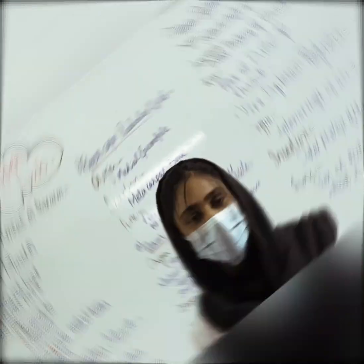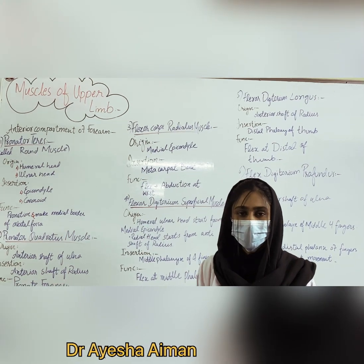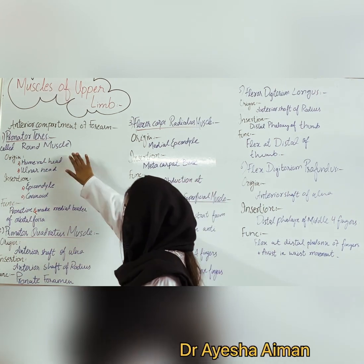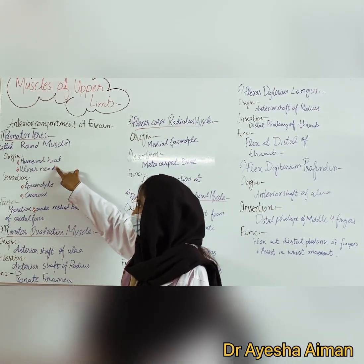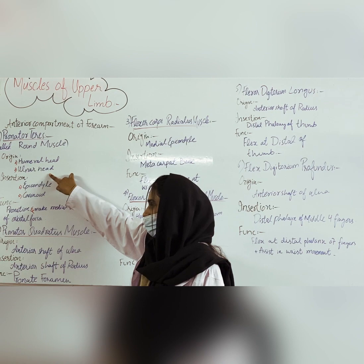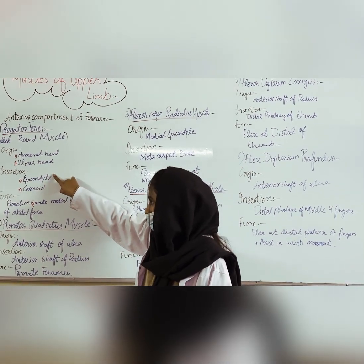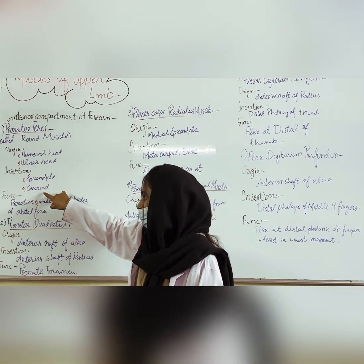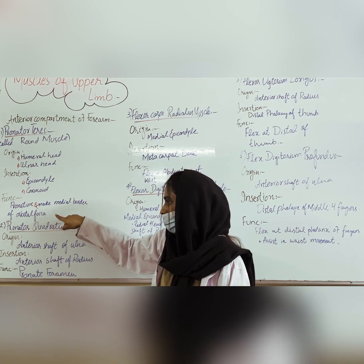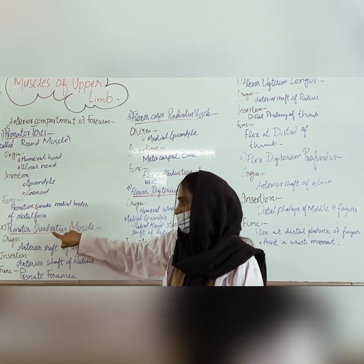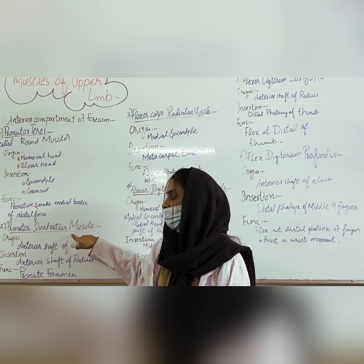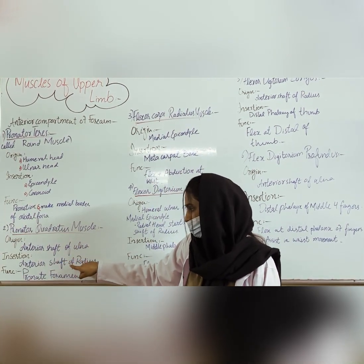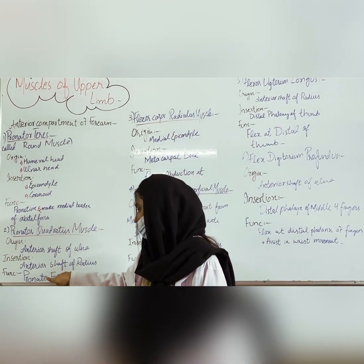Now I will explain the muscles of the anterior compartment of the forearm, which contains seven muscles. The first is the pronator teres, also called a round muscle. It has two origins: the humeral head and the ulnar head. Its insertions are the medial epicondyle and the coronoid process. Its function is pronation. The second is the pronator quadratus, which has one origin — the anterior shaft of the ulna — and one insertion — the anterior shaft of the radius. Its function is pronation.